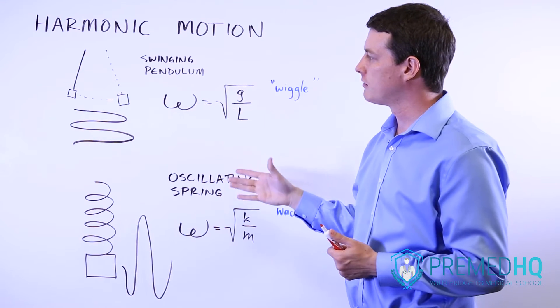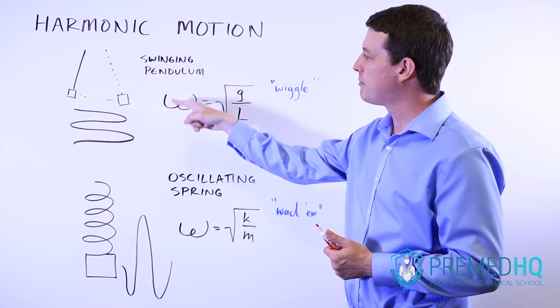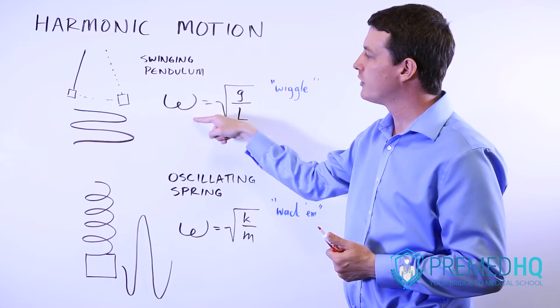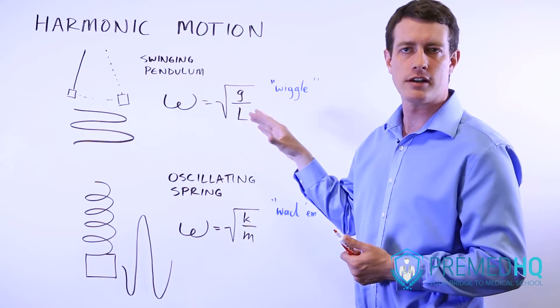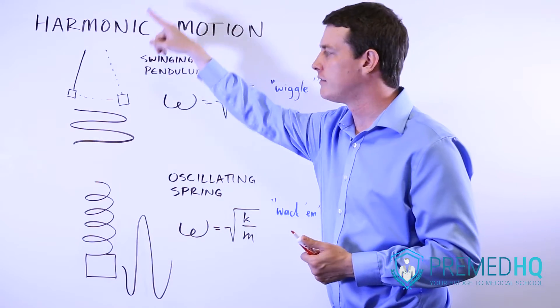And so for these formulas, what we have is for a pendulum, you have the angular frequency equals the square root of g over L, where g is the gravitational constant and L is the length of the string.